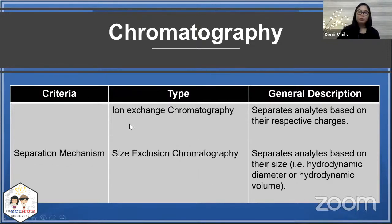The final group is based on separation mechanism. You have ion exchange chromatography, which separates the analytes based on their respective charges, and size exclusion chromatography, which separates the analytes based on their size.